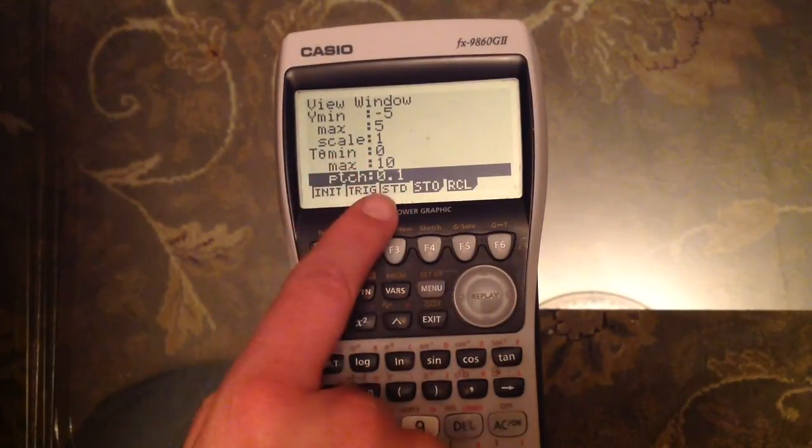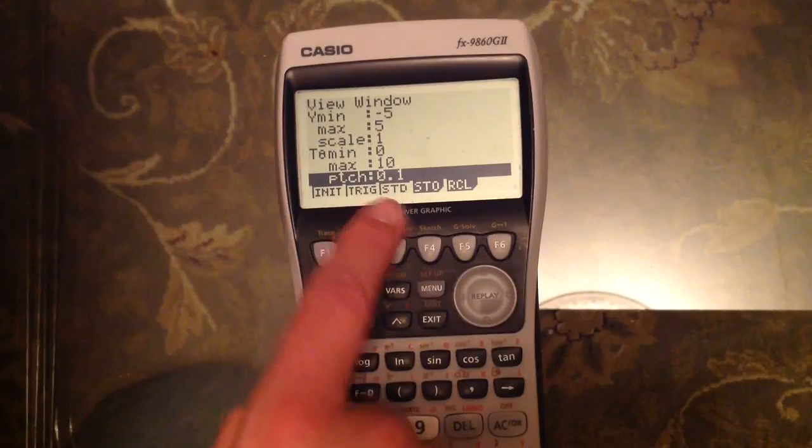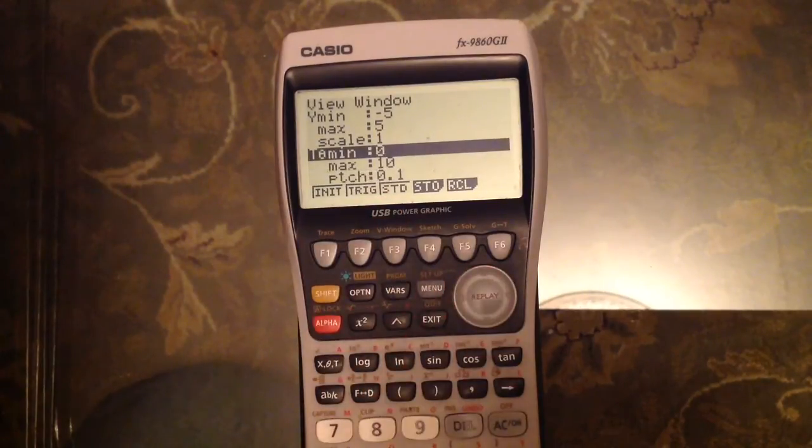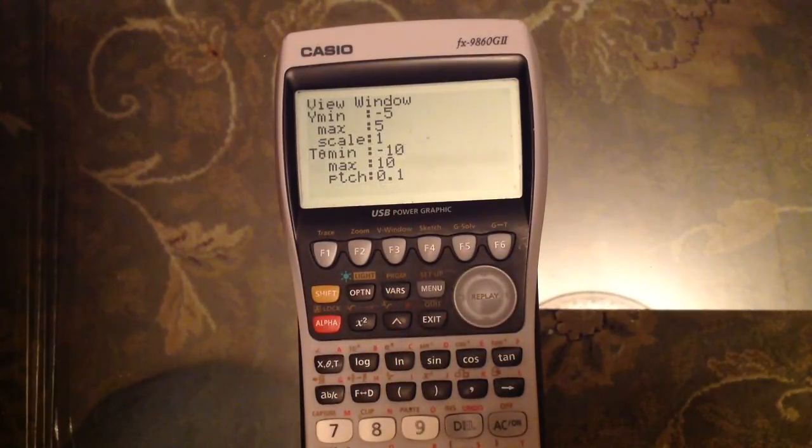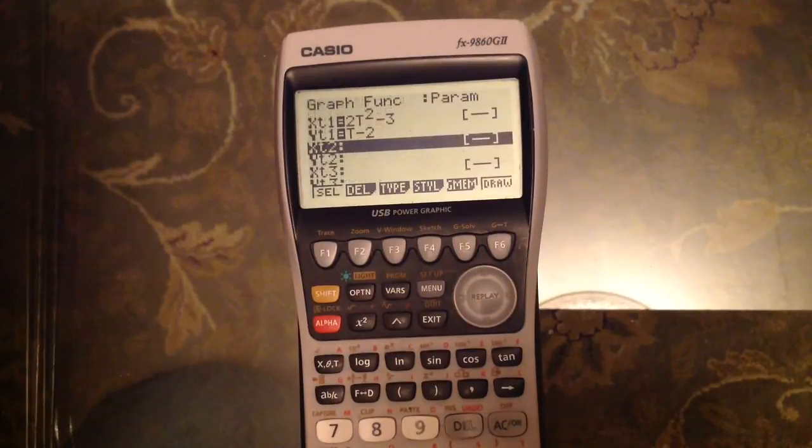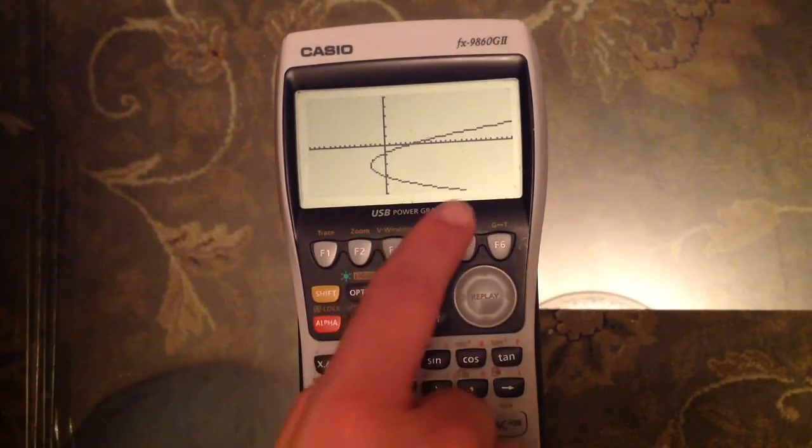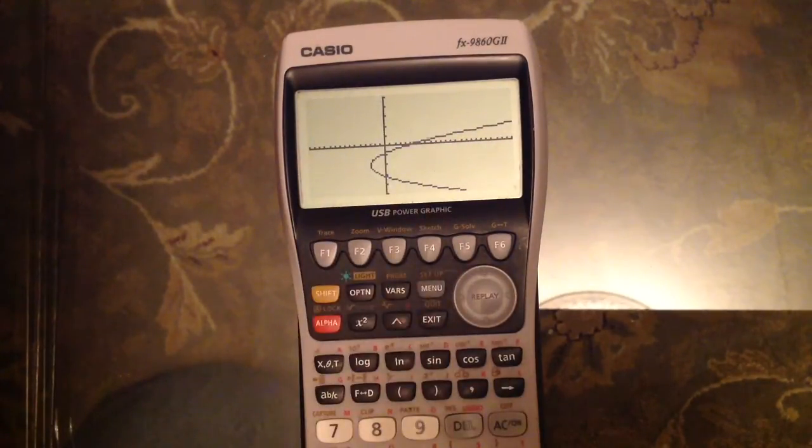So it'll do 0, 0.1, 0.2, and so on. I'm going to change these so that T goes from minus 10 to 10. I'll leave the pitch at that. We should now see that it draws a bit more of the graph, so we've got a more accurate picture there.